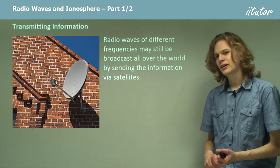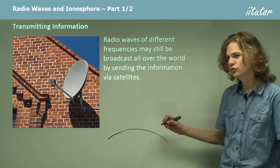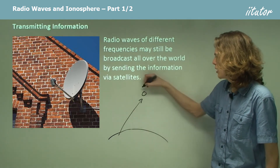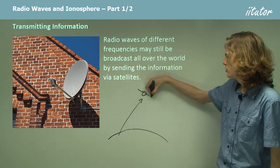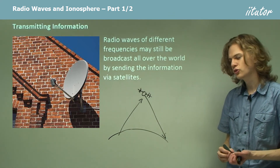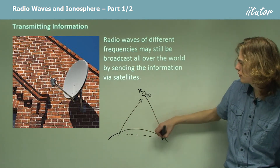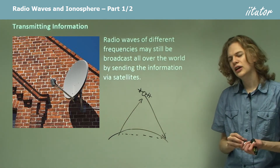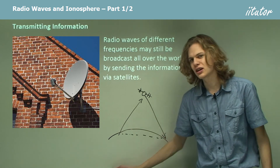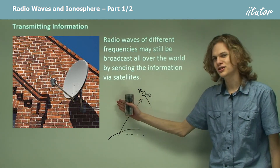So instead of bouncing a message off the ionosphere, we're effectively bouncing a message off a satellite. That means that even though two stations don't have line of sight to each other, the satellite is able to transmit the radio wave to a receiving station or to a receiving satellite dish.